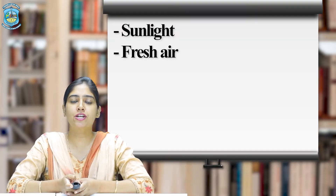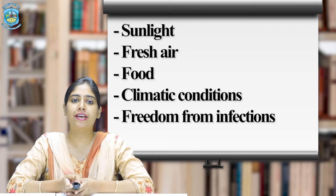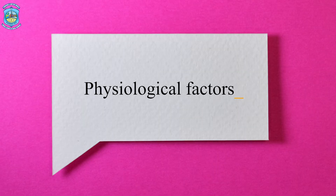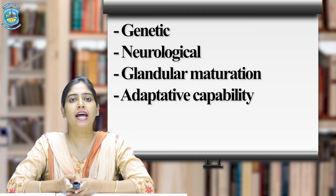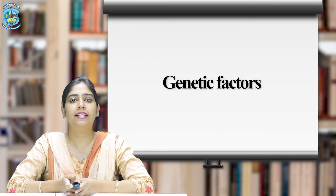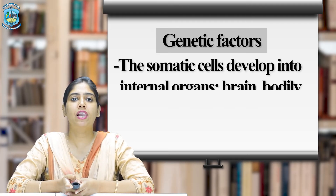After having understood growth and development and the principles of growth and development, let us now look at the factors which influence or affect growth and development in the child. Physical growth depends upon heredity and environmental factors such as sunlight, fresh air, food, climatic conditions and freedom from infections. There are many factors that affect growth and development and they can be summarized in the following manner.